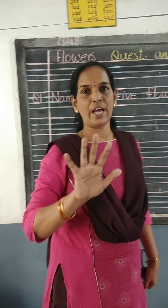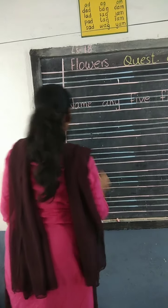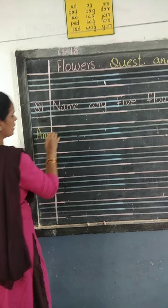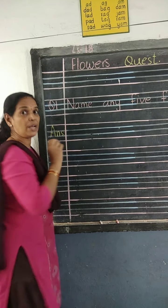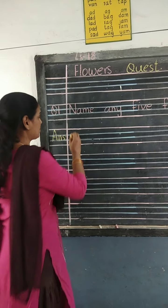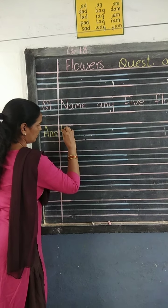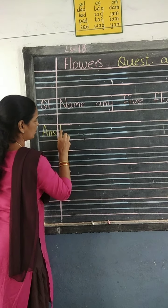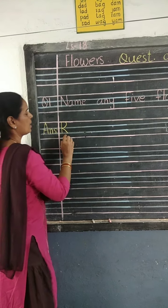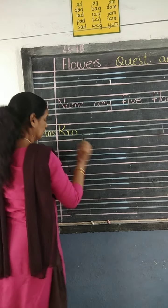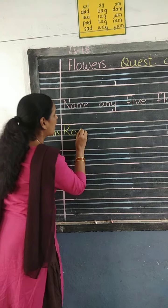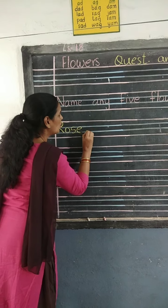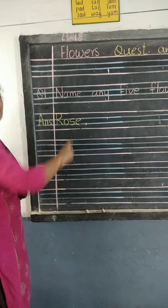We'll write the answers. Any five flowers we have to write, okay? So that is the answer. Write A-N-S — answer — in the margin. Finish first one. The first letter we have to write in capital letters today. R capital — we are writing roses now, so R must be a capital letter. Capital R — R-O-S-E, rose. Small comma.